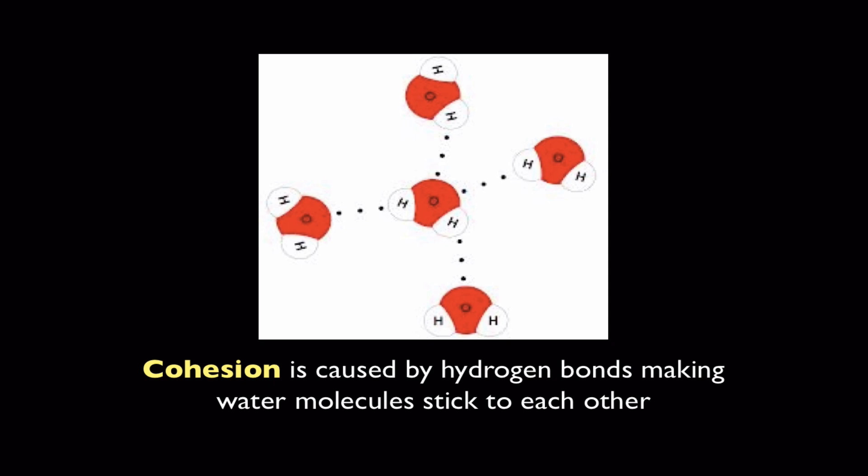Sorry about that. These bonds, there's one, two, three, four of them here among five water molecules, are called hydrogen bonds. Hydrogen bonds can form and reform very easily. They're not strong bonds, but they make water molecules stick to each other. They give water a stickiness that we call cohesion.